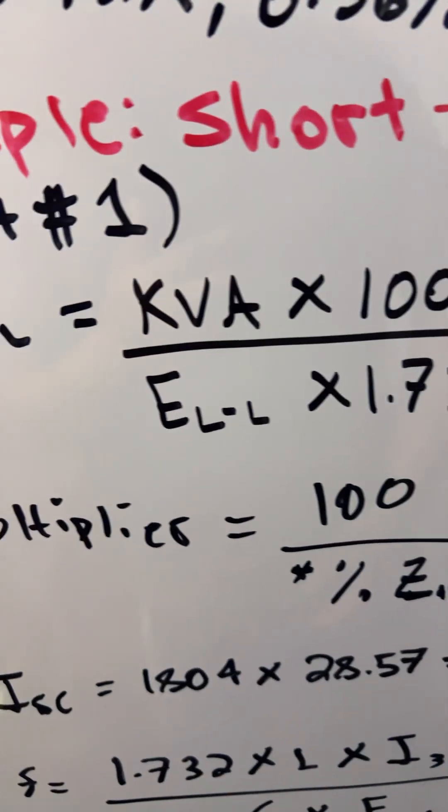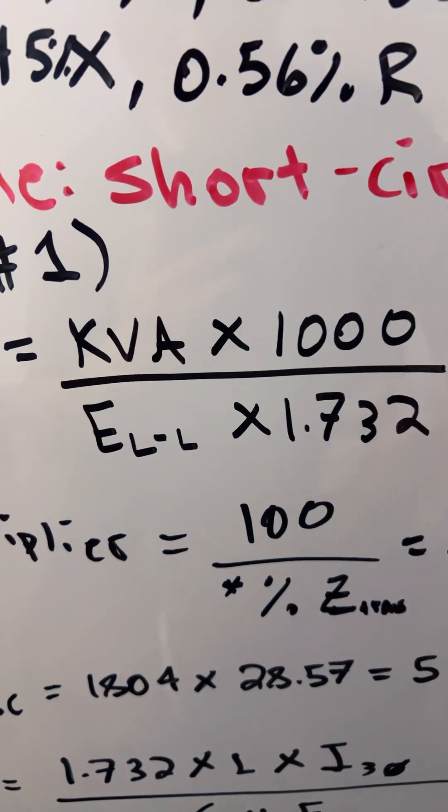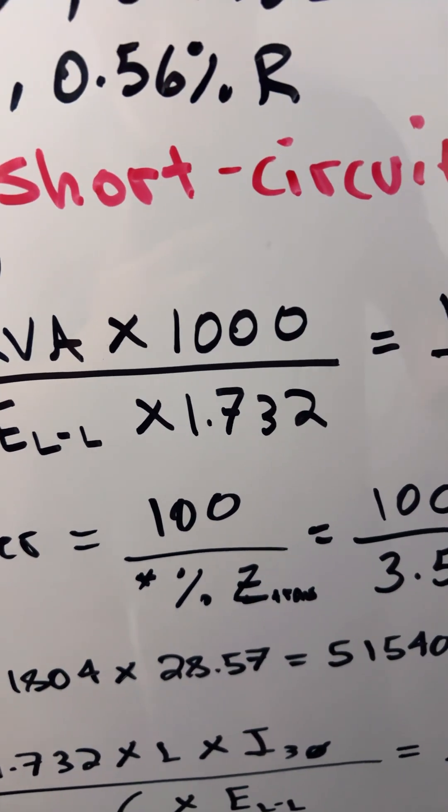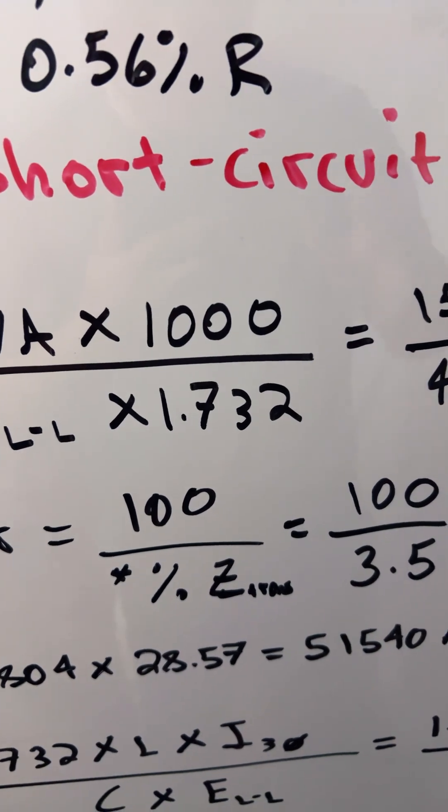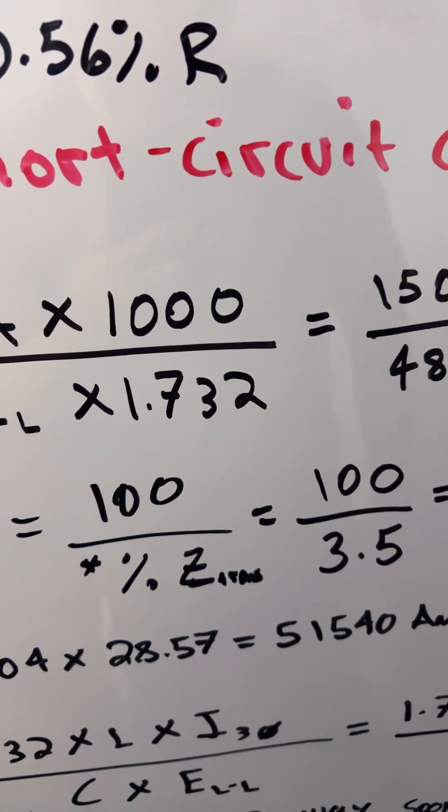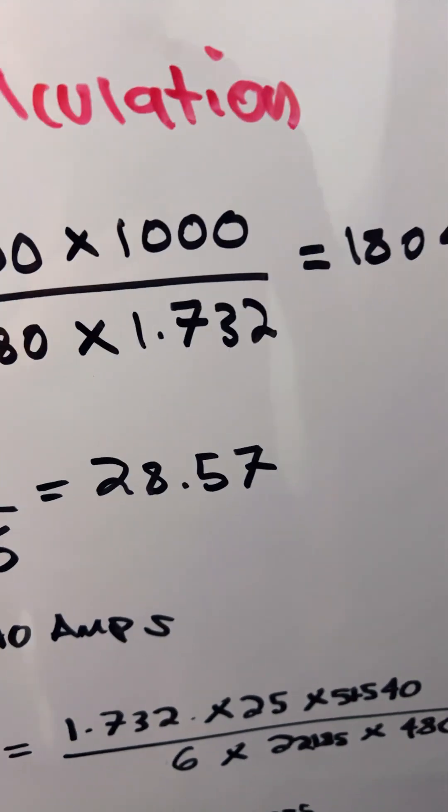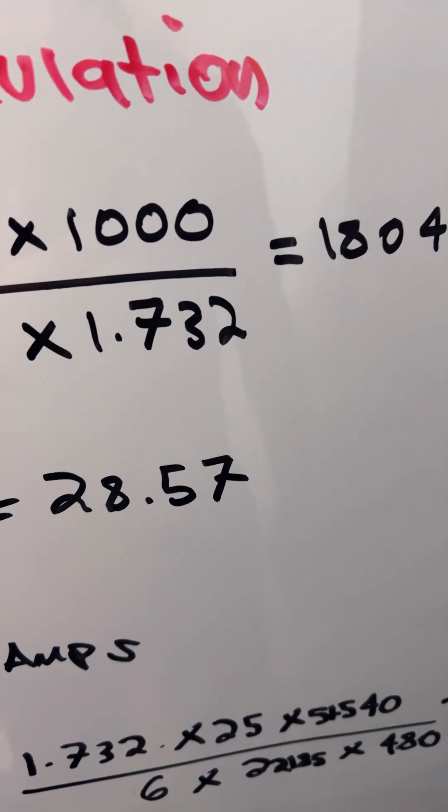Then we find the transformer multiplier. The formula is 100 over the transformer impedance, which equals 100 divided by 3.5, giving us 28.57.